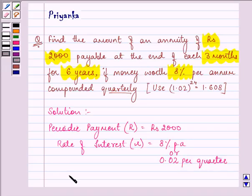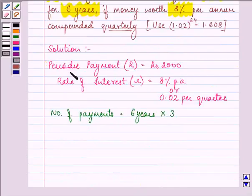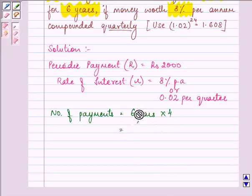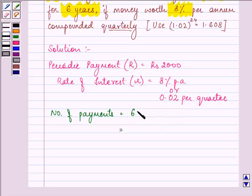And further we are given the number of payments. In 6 years, each year we are making 4 installments. So we have N, this is represented by N as 24 quarters.